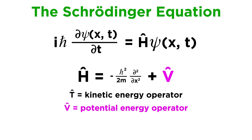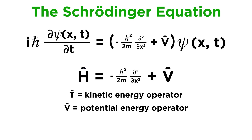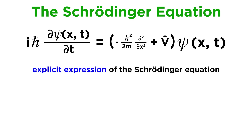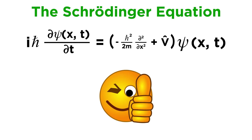The potential energy operator is a little trickier, as it will depend on what type of potential we have, so let's leave that as it is for the time being. With the Hamiltonian operator defined, let's plug this into the Schrödinger equation in place of H. That leaves us with the explicit expression of the Schrödinger equation — we finally have this important equation well defined with terms that we understand.